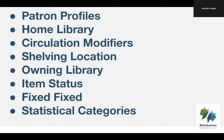Statistical categories allow you to collect information about patrons or items for which there's no specific field in the patron account or item record. Manitoba libraries should make note of the Spruce level Manitoba municipality patron stat cat, as that one is intended to be used for your annual statistics.